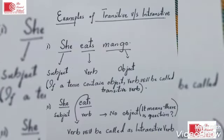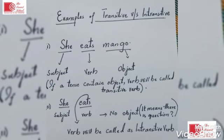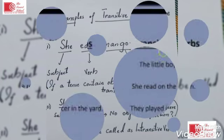For further clarification of transitive and intransitive verbs: 'She eats mango' versus 'She eats.' In the first example you can see subject, verb, and object. If a sentence contains an object, the verb is called transitive. If the sentence doesn't contain any object, the verb is called intransitive, just as you can see the difference between these two examples.